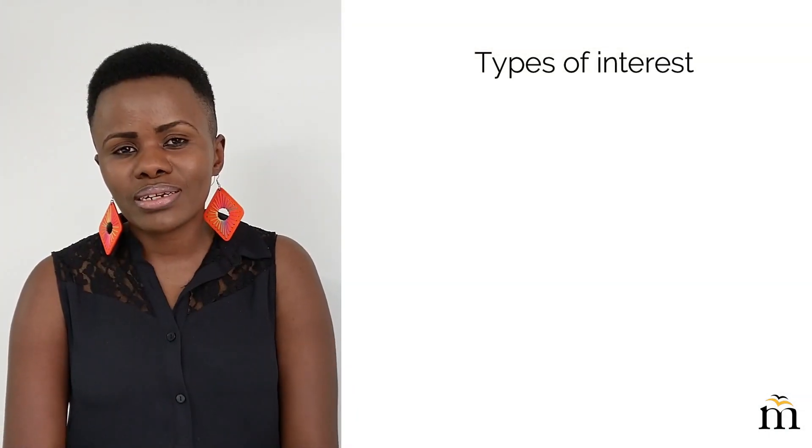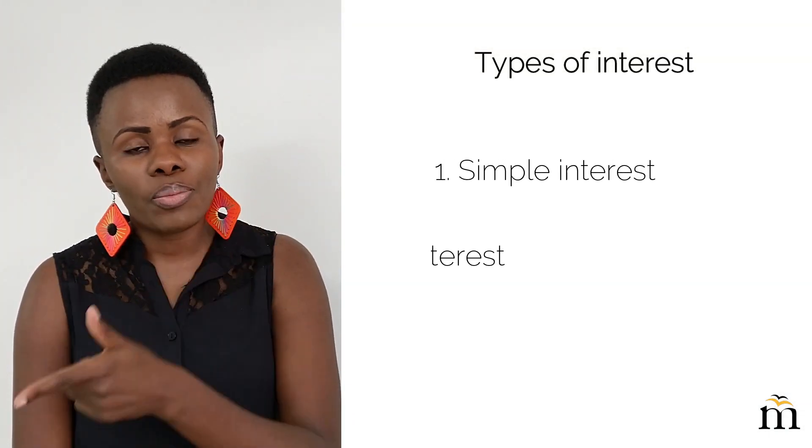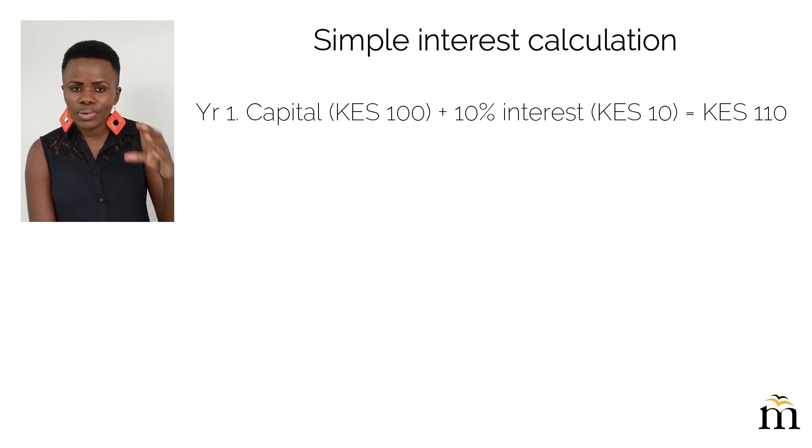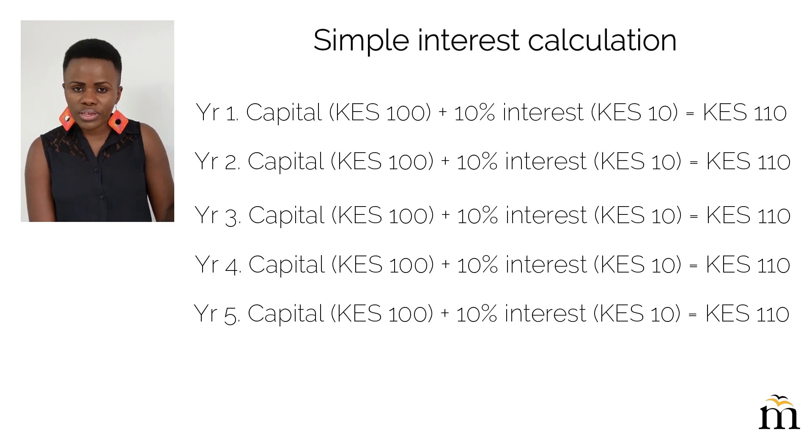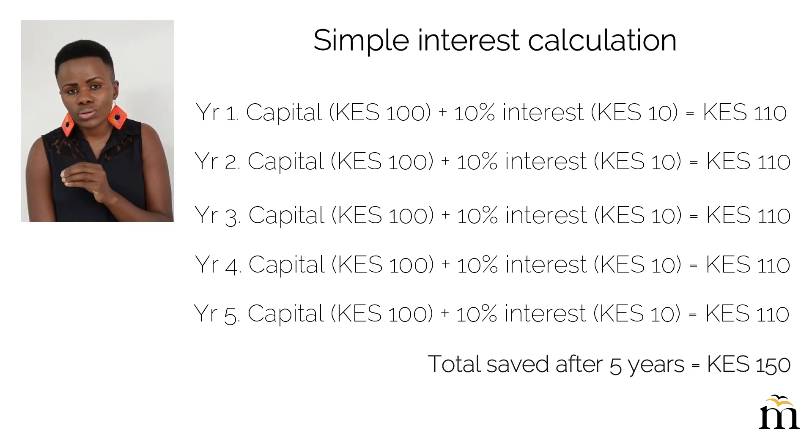If you remember in primary school math — I think it was in class six — when we did interest, we had two types: simple interest and compound interest. With simple interest, if you save 100 shillings for five years at 10%, it means every year you get 10% of your 100 shillings. So year one you get 10 shillings as interest, year two the same, year three the same, up to year five. At the end of five years you will have 150 shillings in total.